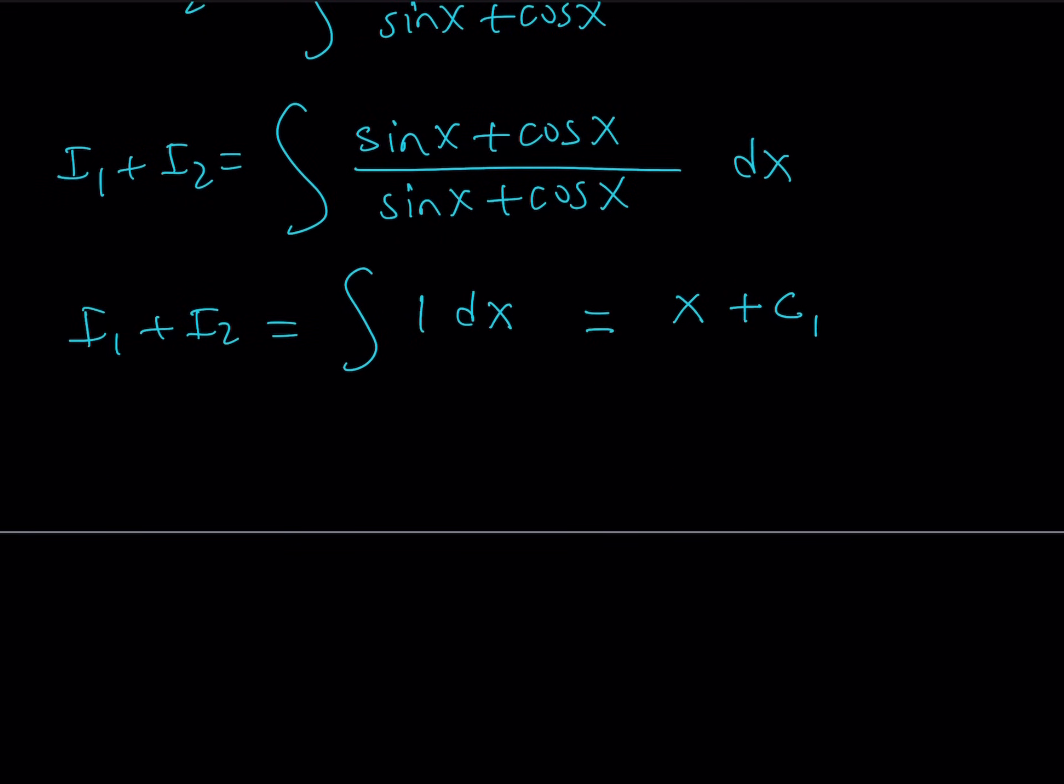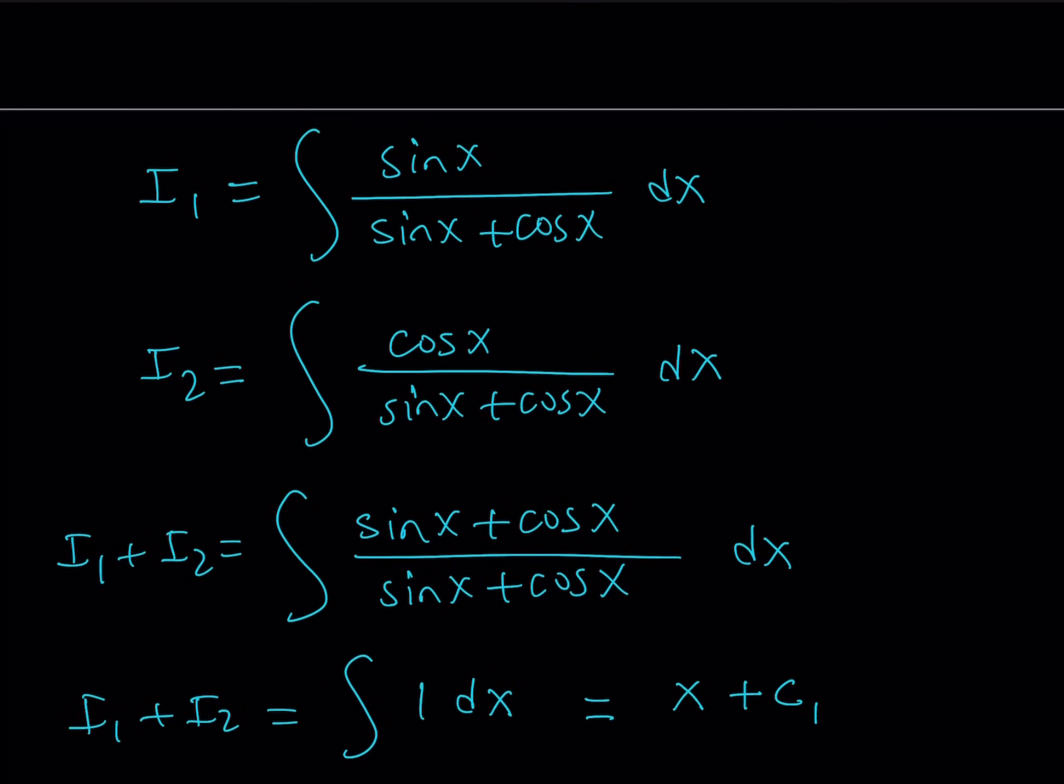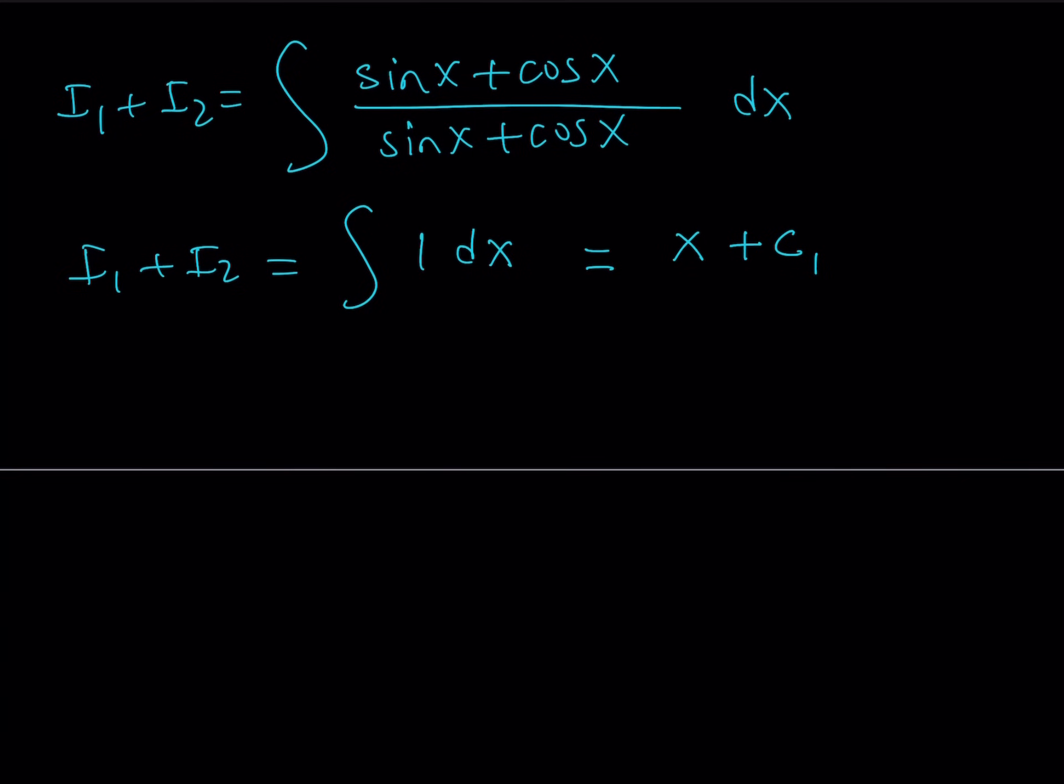So now we have this i1 plus i2, but I'm looking for i1. So I need to be able to find another equation with i1 and i2 so that I can solve for i1, because that's my goal. If you look at i1 and i2 carefully, you're going to notice that I have sine x plus cosine x at the bottom. What is the derivative of sine x plus cosine x? If you differentiate sine x plus cosine x, you get cosine x minus sine x. Does that tell you something?